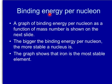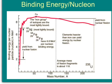Binding energy per nucleon. A graph of binding energy per nucleon as a function of mass number is shown on the next slide. The bigger the binding energy per nucleon, the more stable the nucleus is. The graph shows that iron has the greatest binding energy per nucleon. Therefore, iron is the most stable element.